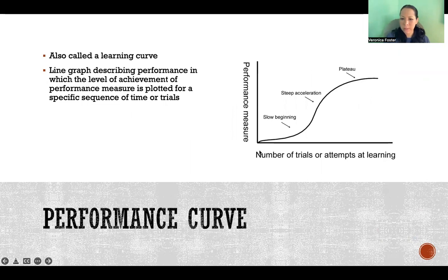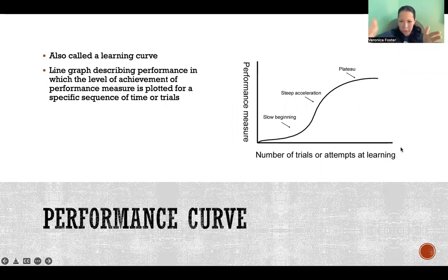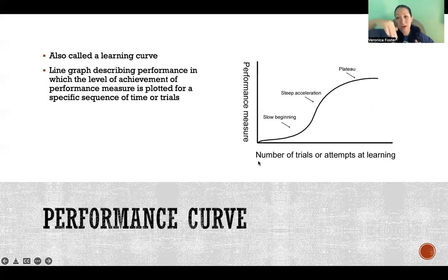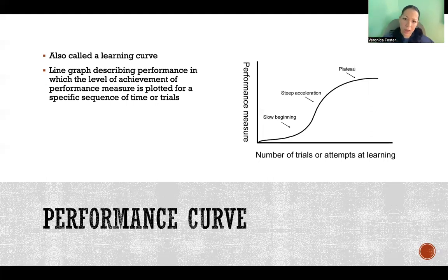Across the bottom would be time or different trials or tests, and then on the y-axis would be the performance measure. Which direction the curve goes — it could be in an upward direction or in a downward direction — depends on the performance measure.